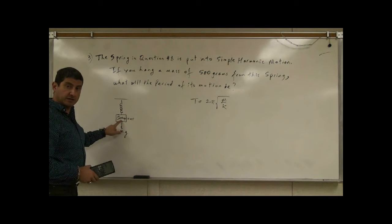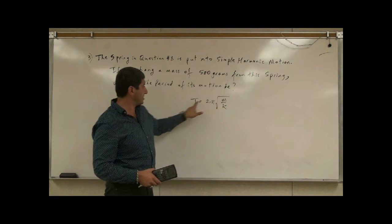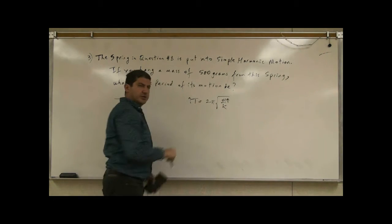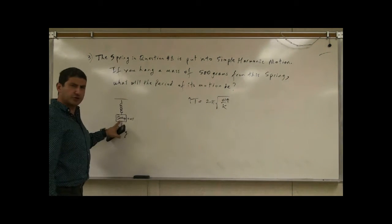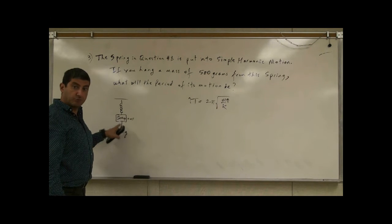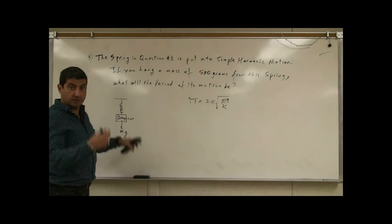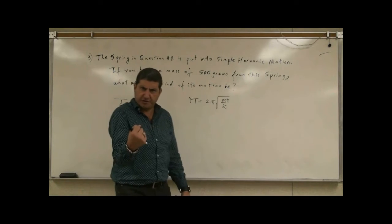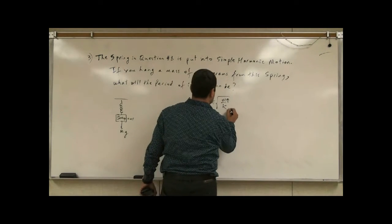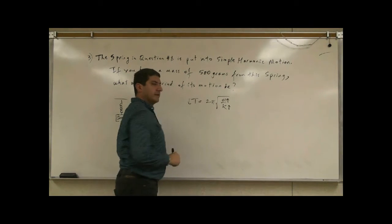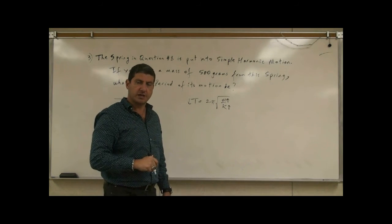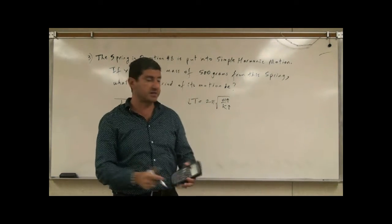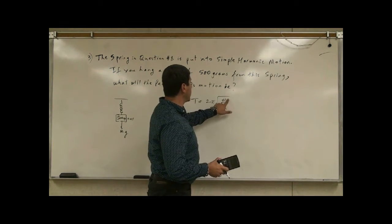The more mass you hang, the heavier it is, the greater the mass, the larger the period. If the mass is large, the period will be larger. If I hang 1,000 grams it's going to take more time to go back and forth; 2,000 grams, even more time. And k is in the denominator, so if it's a very stiff spring and k is large, it's going to take less time to go back and forth once. So whenever you look at an equation, it should physically make sense, logically make sense, and have the right units.